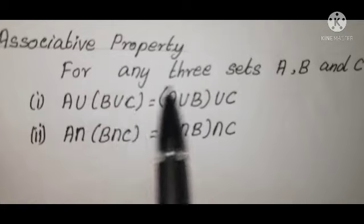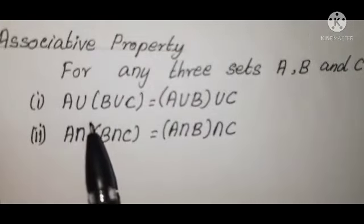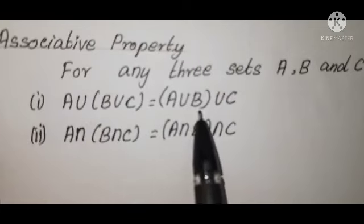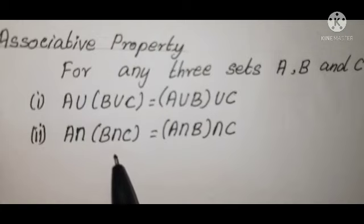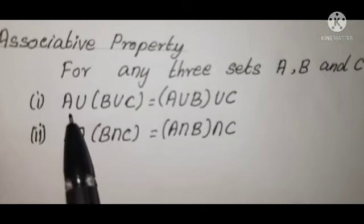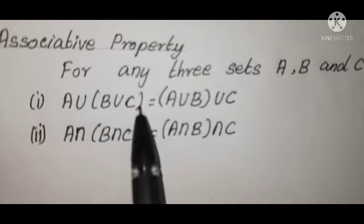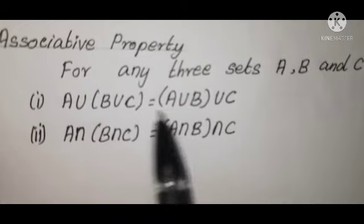One more time: for any three sets A, B, and C. First: A union (B union C) equals (A union B) union C. Second: A intersection (B intersection C) equals (A intersection B) intersection C.